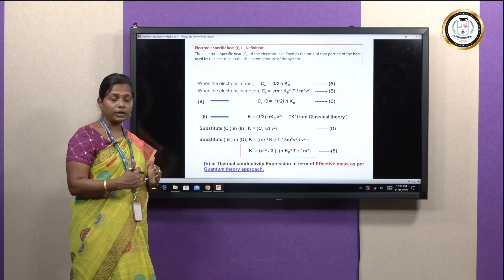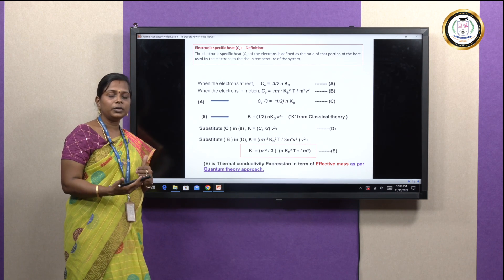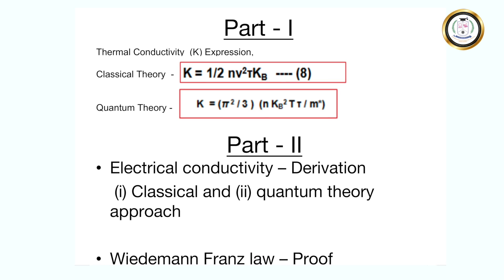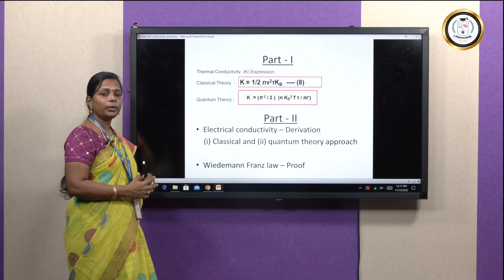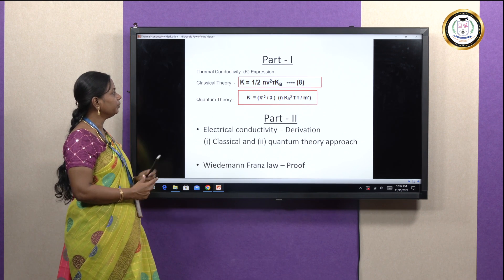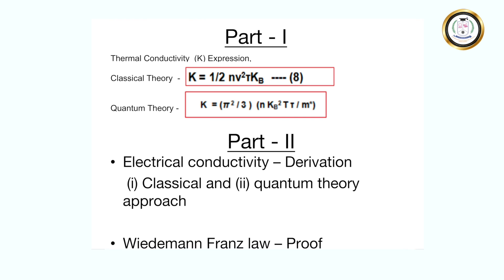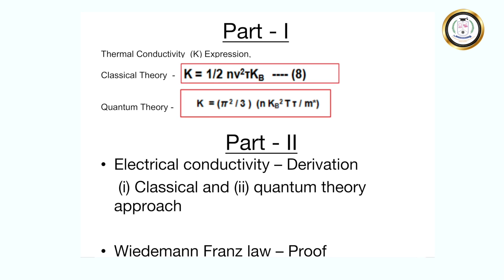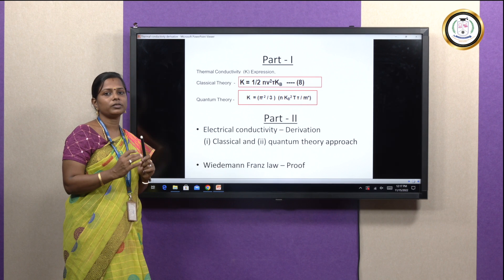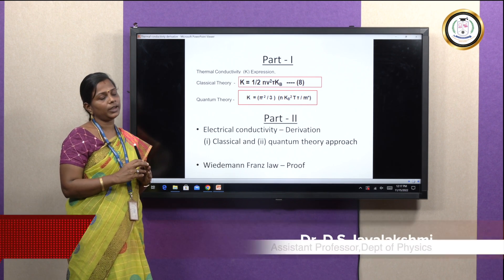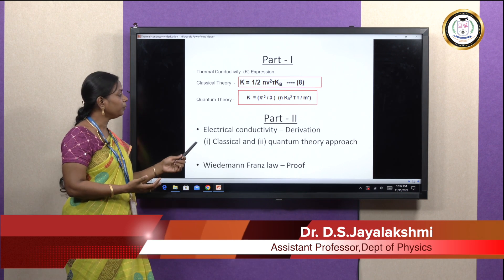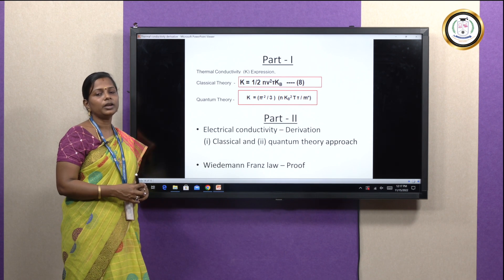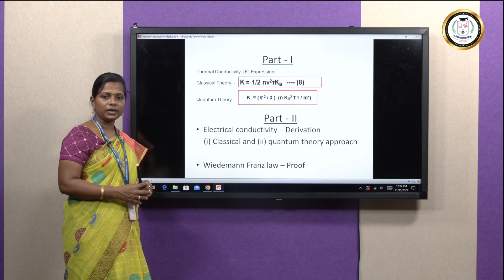In this session, we discussed two derivations for thermal conductivity. The classical theory gives K equals (1/2)NV²tau·K_B, while the quantum theory gives K equals (π²/3) × NK_B²T × tau/m*, including the effective mass of an electron term. In the next session, we will derive electrical conductivity and use both approaches to prove the Lorentz number and its experimental value.